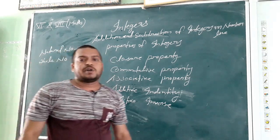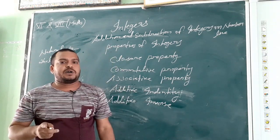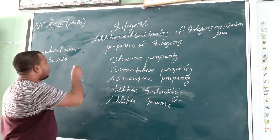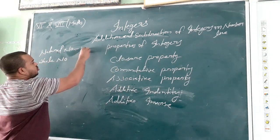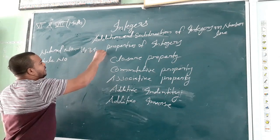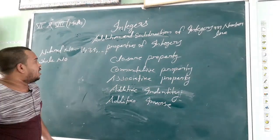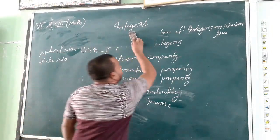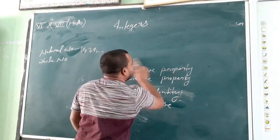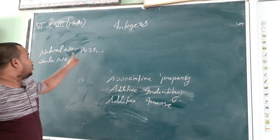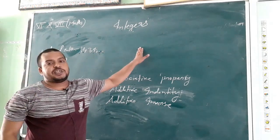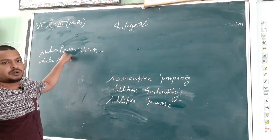What is a natural number? All counting numbers are called natural numbers, like 1, 2, 3, 4 and so on. The numbers 1, 2, 3, 4 till infinity are known as natural numbers.